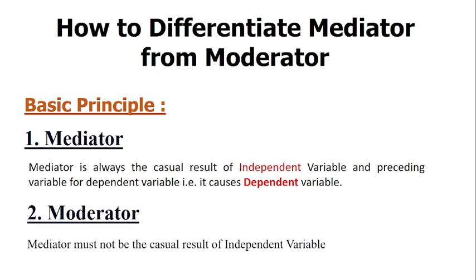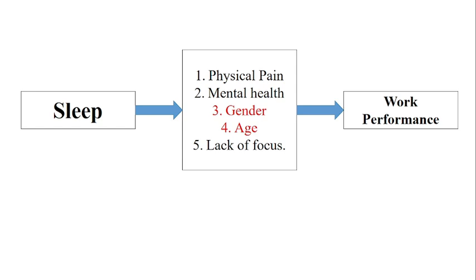For the moderator, there must not be a causal result of the independent variable — the moderator is never the result of the independent variable. It only impacts the strength of the relationship between the independent and dependent variable. Let's look at some practical examples to clarify these concepts further.